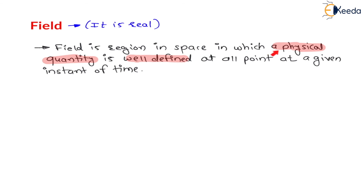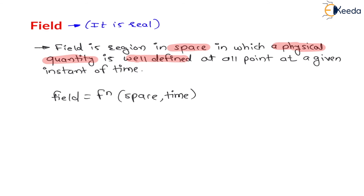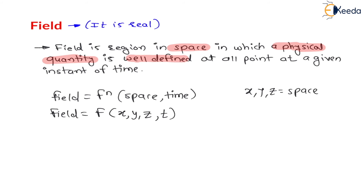Let us again understand the definition of field. Field is a region in space — meaning field is a function of space. At a given instant of time means as time changes, the field may change. Therefore, any field is expressed as a mathematical function of space and time. Space is nothing but x, y, z directions, and time is represented by t. So any field is a function of space (x, y, z) and time t.